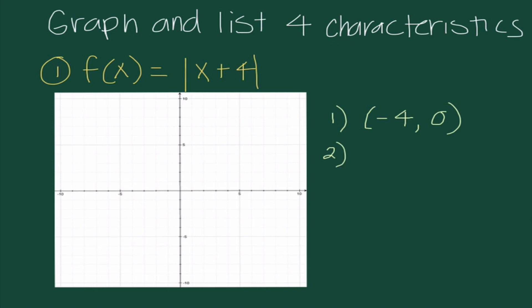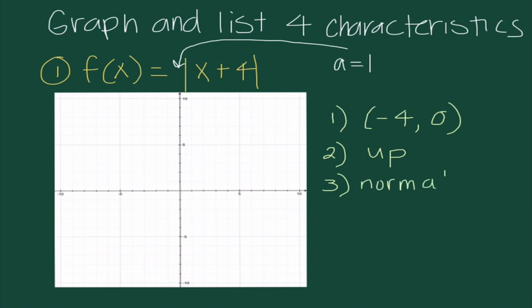Next, we need to figure out if this absolute value graph opens up or down. Our A value is the coefficient in front of the absolute value sign — since I don't see anything, it's really 1. Since A equals 1 and 1 is positive, we say it opens up. Also, since the absolute value of 1 equals 1, we say it is normal. Our line of symmetry is X equals negative 4, matching the X value of our vertex.